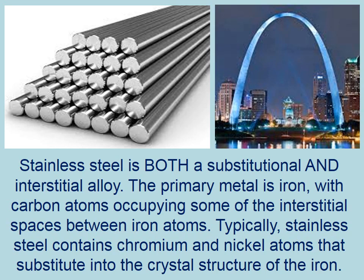Stainless steel is both a substitutional and interstitial alloy. The primary metal is iron, with carbon atoms occupying some of the interstitial spaces between iron atoms. Typically, stainless steel also contains chromium and nickel atoms that substitute into the crystal structure of the iron.